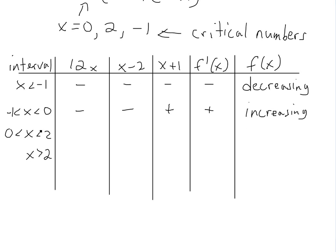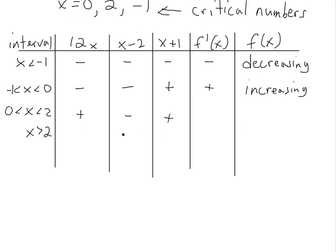For the interval from 0 to 2: 12x is positive. For x minus 2, since x is less than 2, for example 1 minus 2 is negative. For x plus 1, a positive x plus 1 is positive. So we have an odd number of negatives — making f prime negative. Therefore f is decreasing on the interval from 0 to 2.